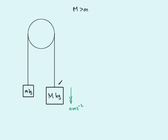And as I said earlier, because the string is inextensible, as soon as this moves downwards, this particle, little m kilograms, will move immediately upwards and will experience exactly the same acceleration. So we're going to mark that one in as a meters per second per second.